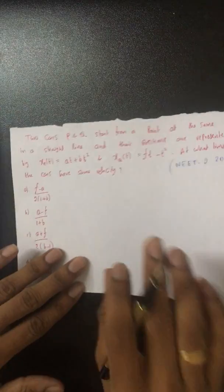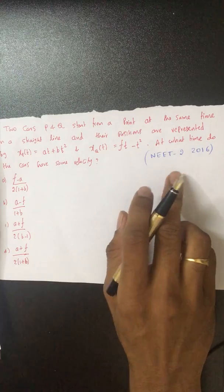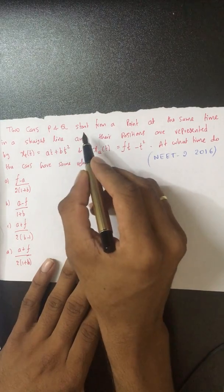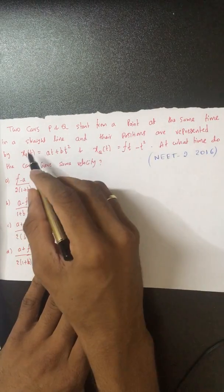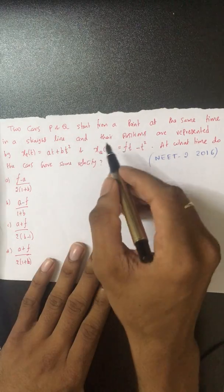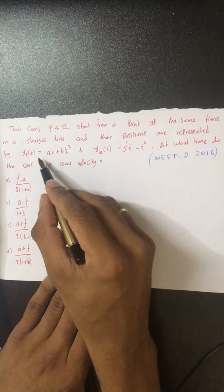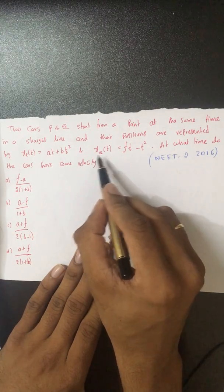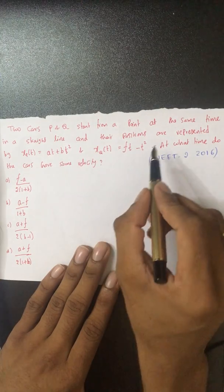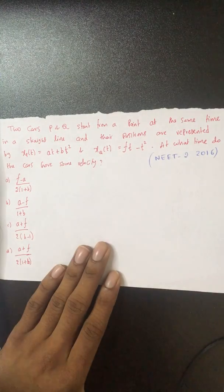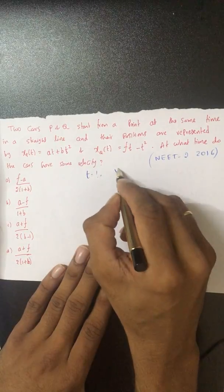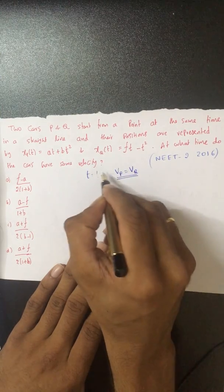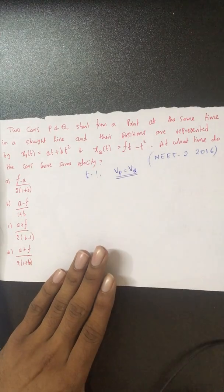We move to the next question, asked in 2016 second phase. We have two cars P and Q which start from the same point at the same time in a straight line. Their positions are represented as functions of time — one for car P and one for car Q. At what time do the cars have the same velocity? That means velocity of P equals velocity of Q, and we need to find the time.